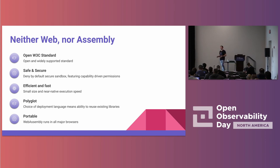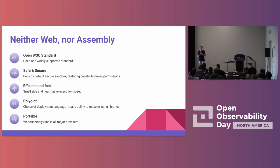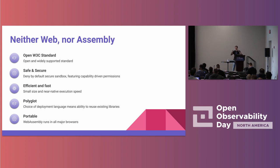We introduce WebAssembly as neither web nor assembly, because what it started as is a way to run native code like a C program in the browser. It needed to be small, efficient, and fast, and we wanted to reuse existing C libraries. But when you look at those aspects as a deployment target, there's a lot that's interesting on the server side. We want services to be rapidly scalable and small — a typical WebAssembly module is 20 to 300 kilobytes. We want it to be secure, running in a deny-by-default sandbox. It's an open W3C standard, supported by the same organization that governs HTML, CSS, and JavaScript.